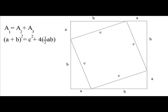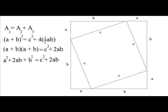So the area of the large square equals the area of the small square plus the area of the four triangles. We can rewrite A plus B quantity squared as A plus B times A plus B, which equals C squared plus 2AB, since four times one half AB reduces to 2AB. Expanding the left side: A times A equals A squared, A times B equals AB, B times A equals AB, and B times B equals B squared. So we get A squared plus 2AB plus B squared equals C squared plus 2AB.